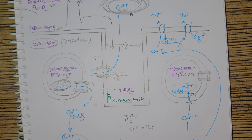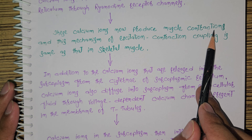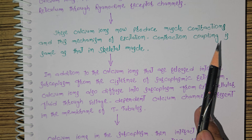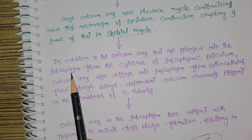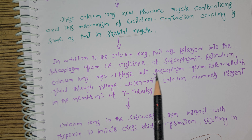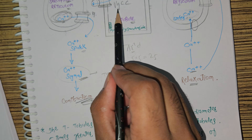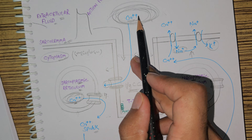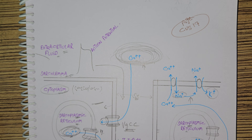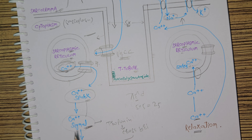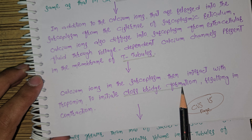There is a release of calcium into the sarcoplasm, and that calcium causes contraction. These calcium ions produce muscle contractions, and this mechanism of excitation-contraction coupling is the same as in skeletal muscles. In addition to calcium released from the cisternae of the sarcoplasmic reticulum, calcium ions also diffuse into the sarcoplasm from extracellular fluid through voltage-dependent calcium channels present in the membranes of the T-tubules. This calcium causes contraction, and calcium ions in the sarcoplasm interact with troponin to initiate cross-bridge formation.